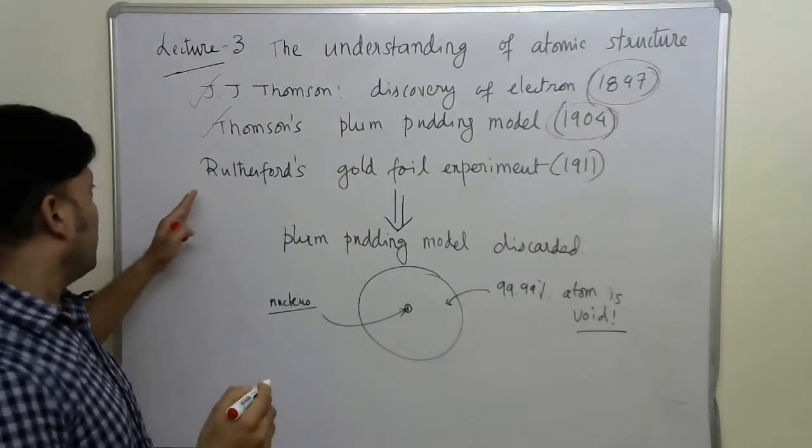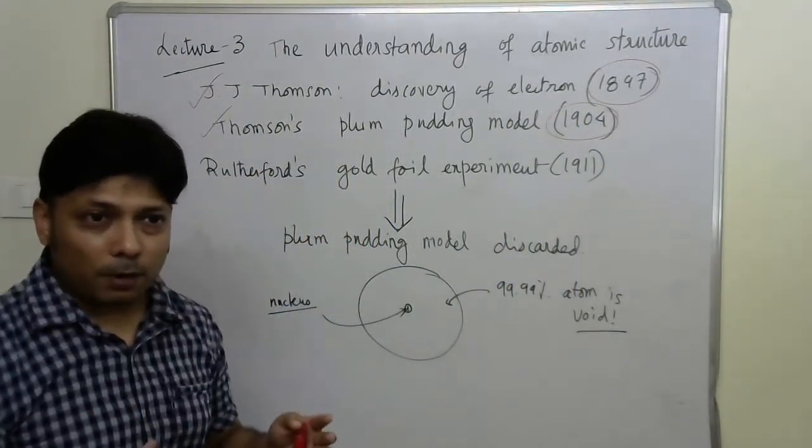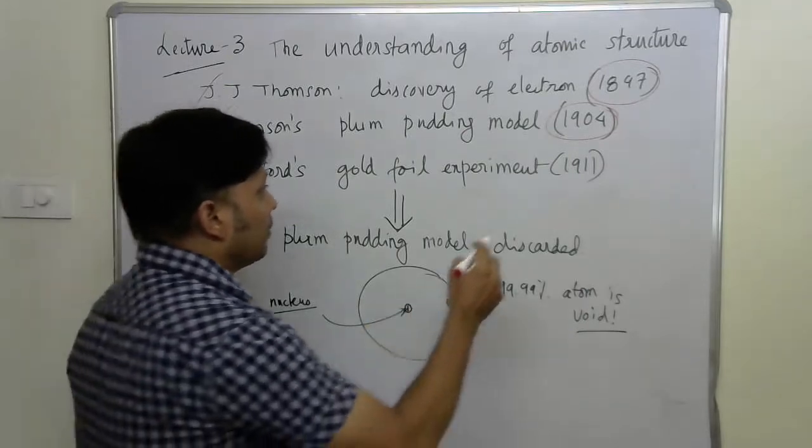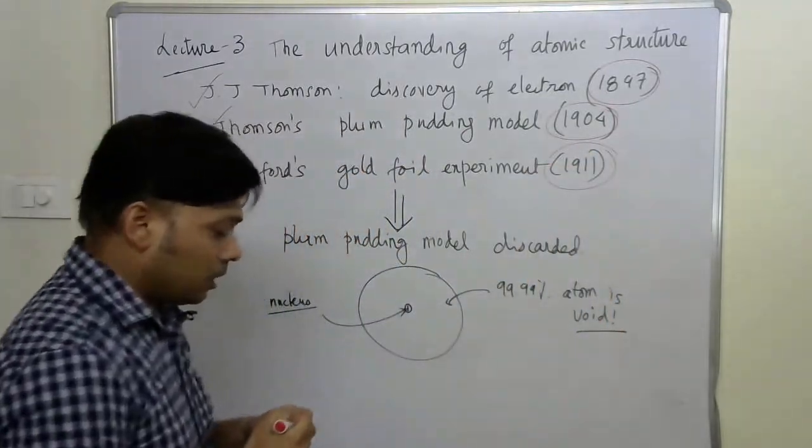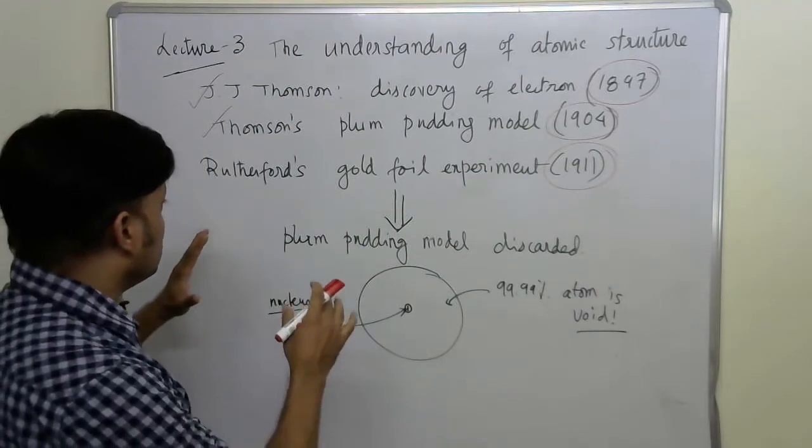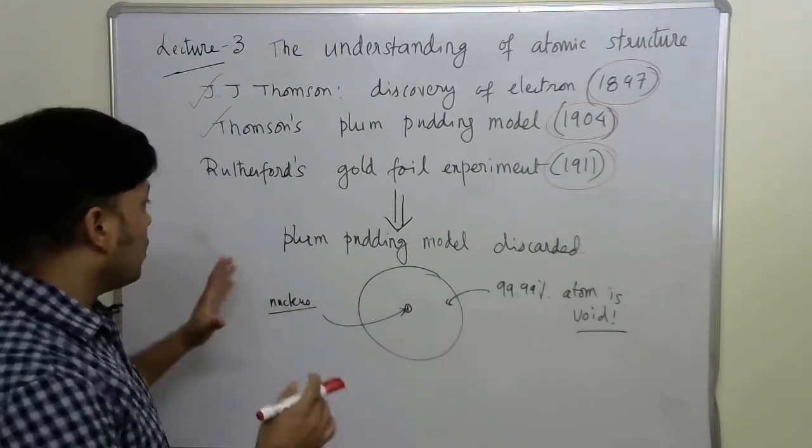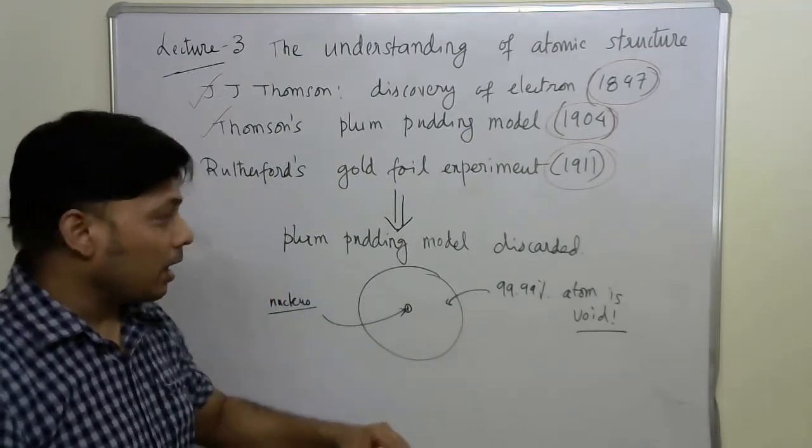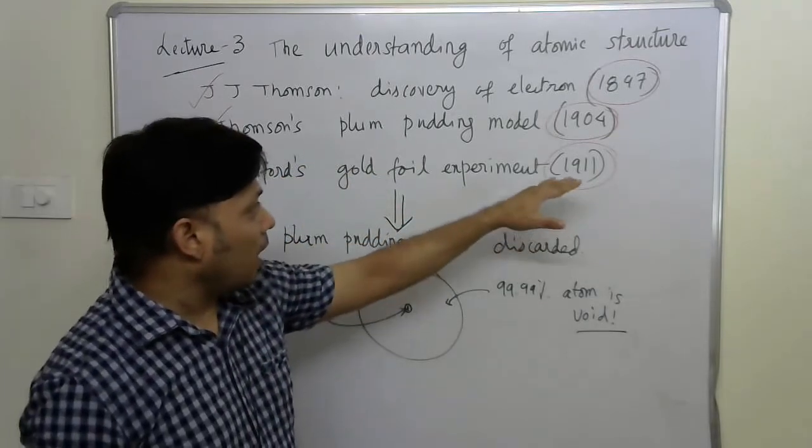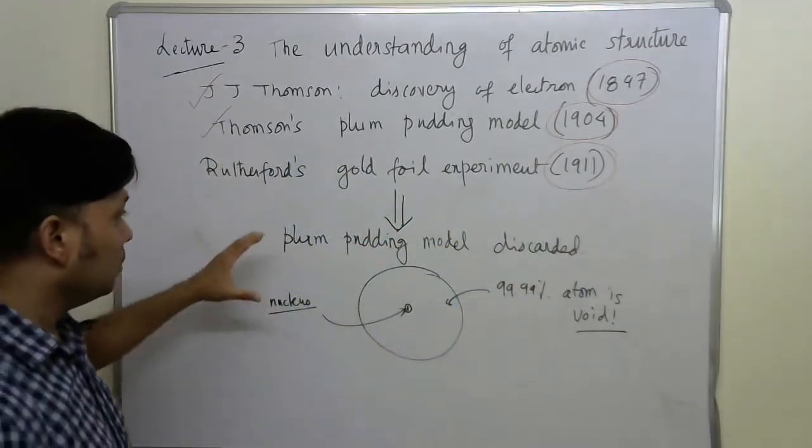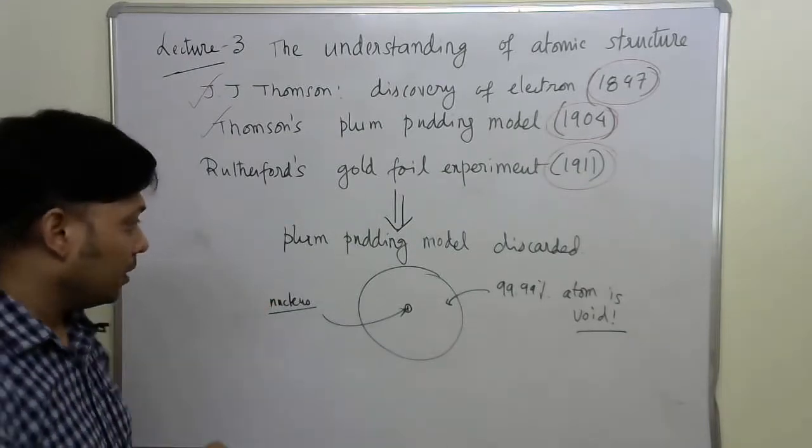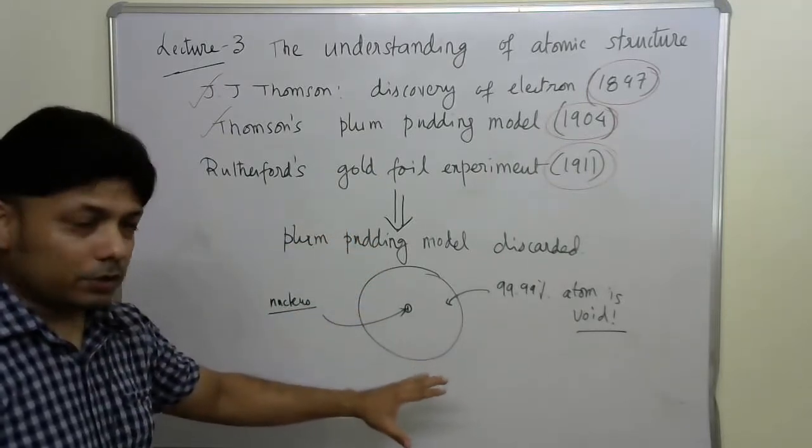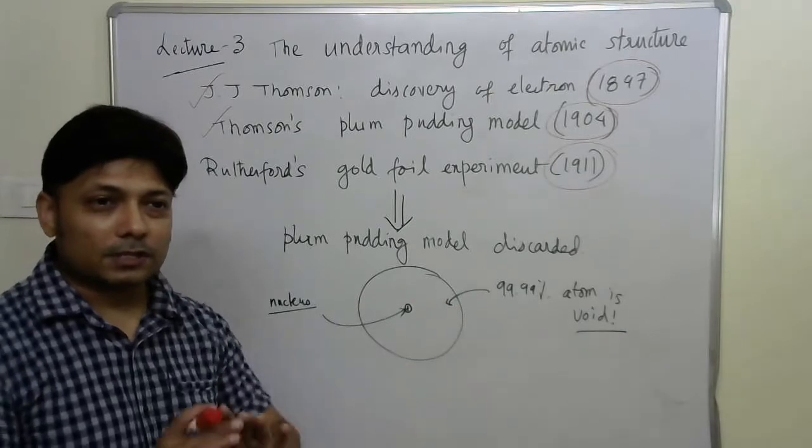I think you already know about what is the plum pudding model in 1904. But then there came Rutherford's famous gold foil experiment, which I already explained to you some time before. It came in the year 1911. The outcome of Rutherford's gold foil experiment was that the plum pudding model proposed by J.J. Thompson was discarded. And at the end of 1911, people knew two things about the atom.